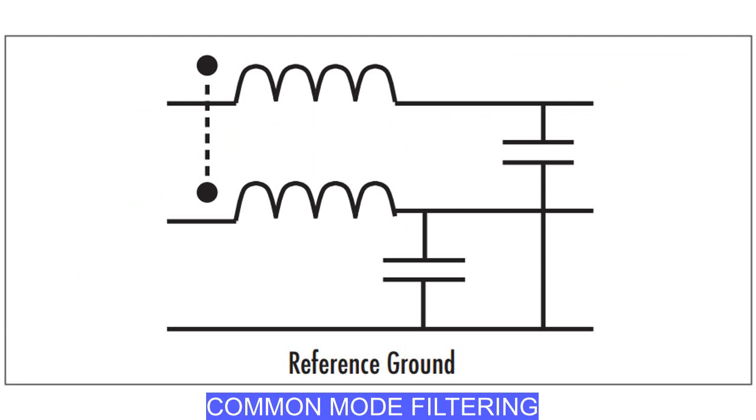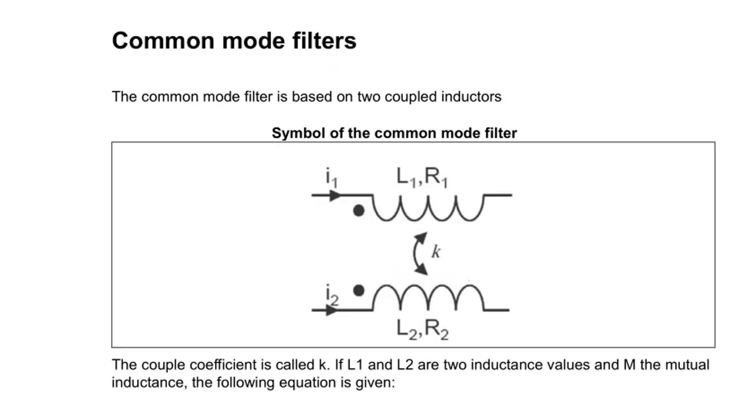A common mode inductor does not affect differential mode currents except for whatever imperfect coupling exists, that is, leakage inductance. It is best to split the inductor evenly on both sides of the transmission line to maintain balance in the circuit. This is important for both common mode and common mode rejection ratio of the circuit. Mutual inductance will maximize the impedance to common mode noise.